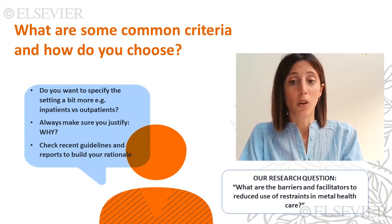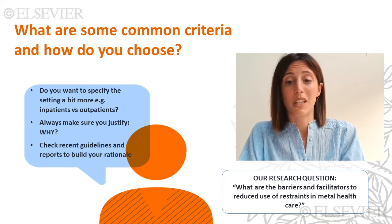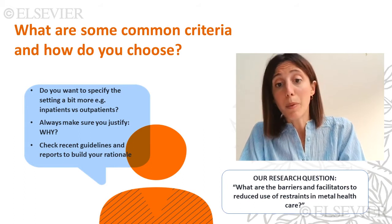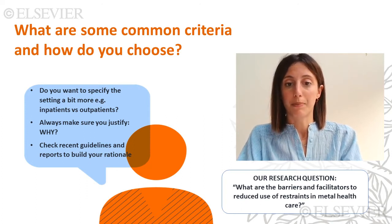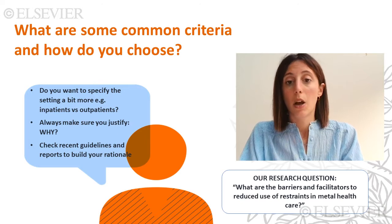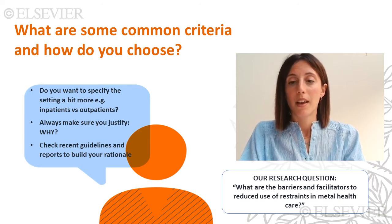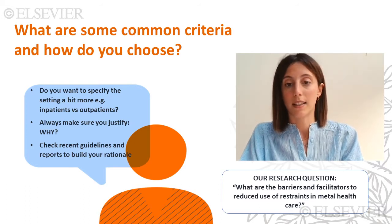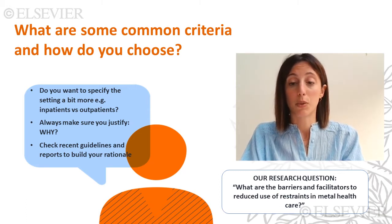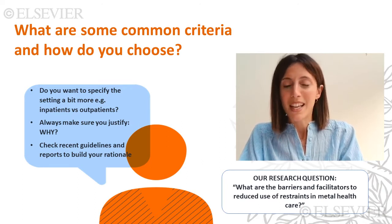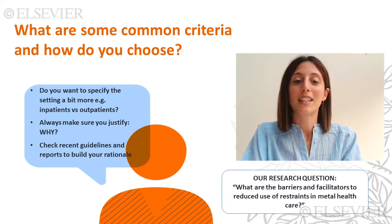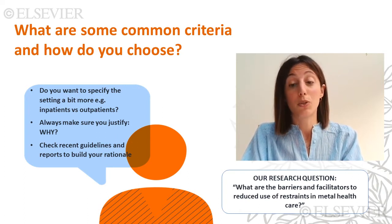For example, are we interested in all mental health settings, or do we want to focus specifically on inpatient settings only, or outpatients? We need to find some evidence of where it might be problematic. If we know restraints are more frequent in inpatient settings and rarely occur in outpatient settings, we might want to focus on inpatients. Always make sure you ask yourself why you are restricting to a specific setting. This asking yourself why is what in research terms we refer to as justify — it means you're using your critical thinking.